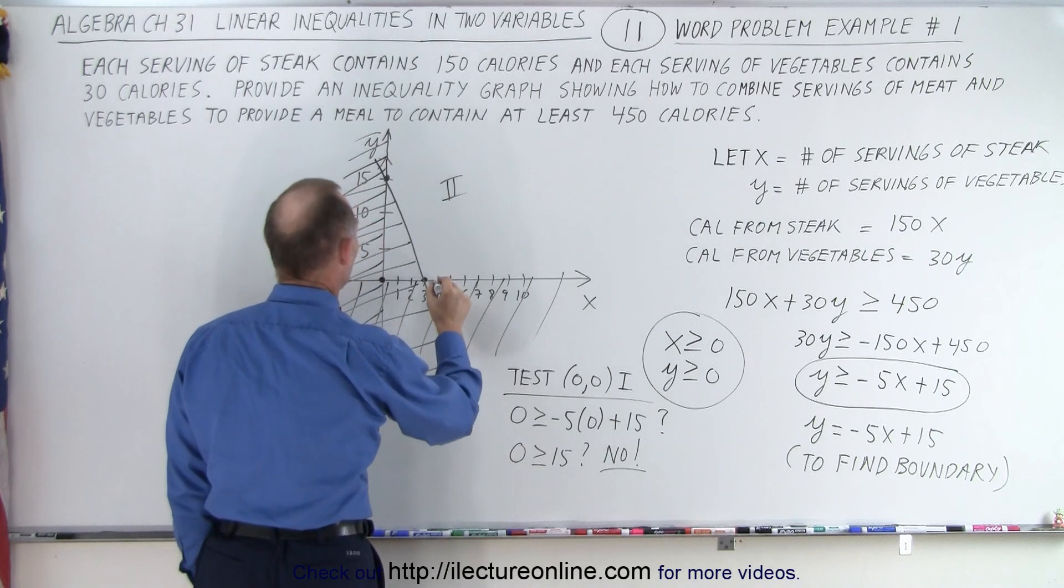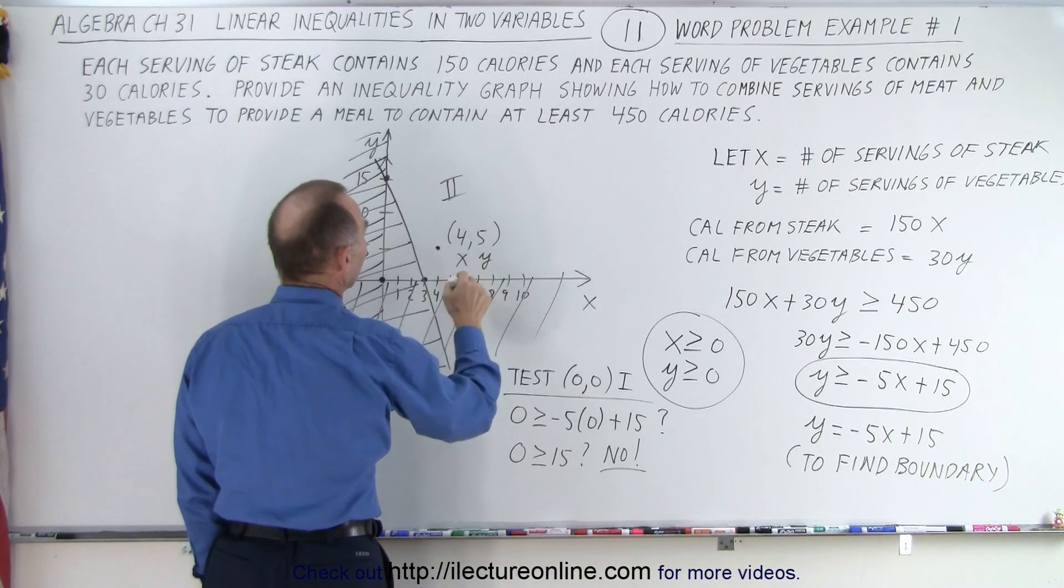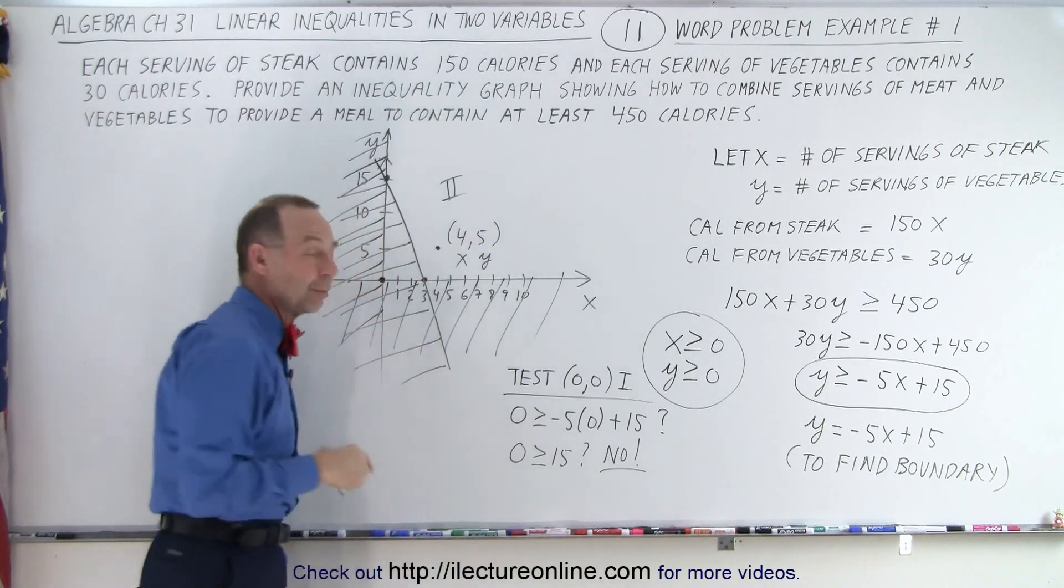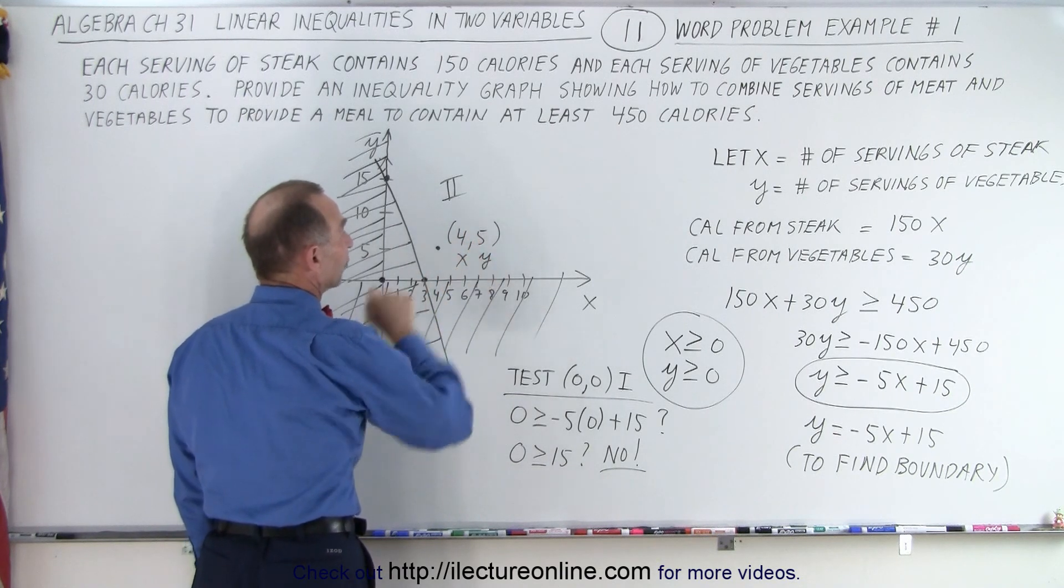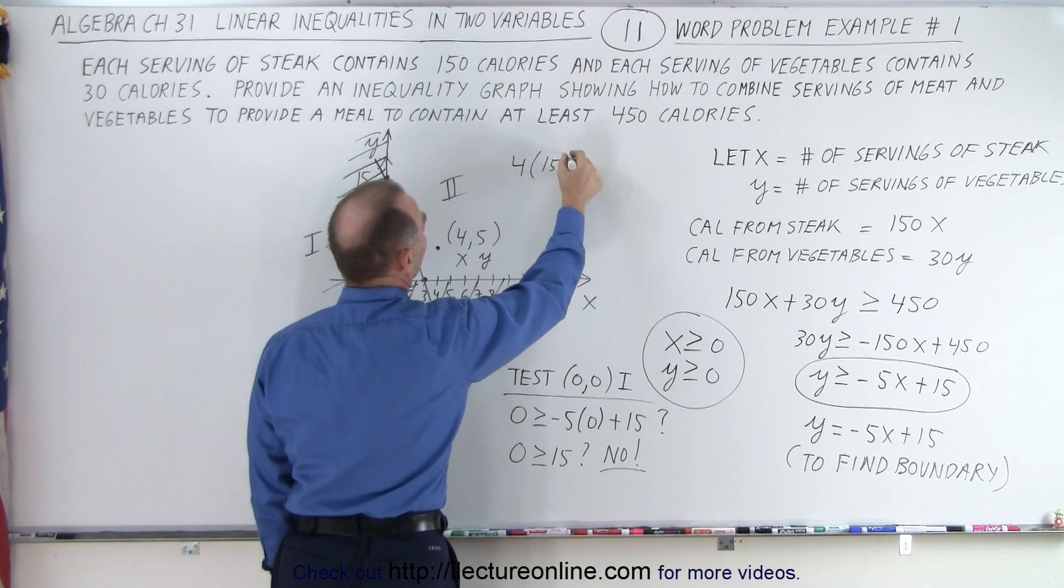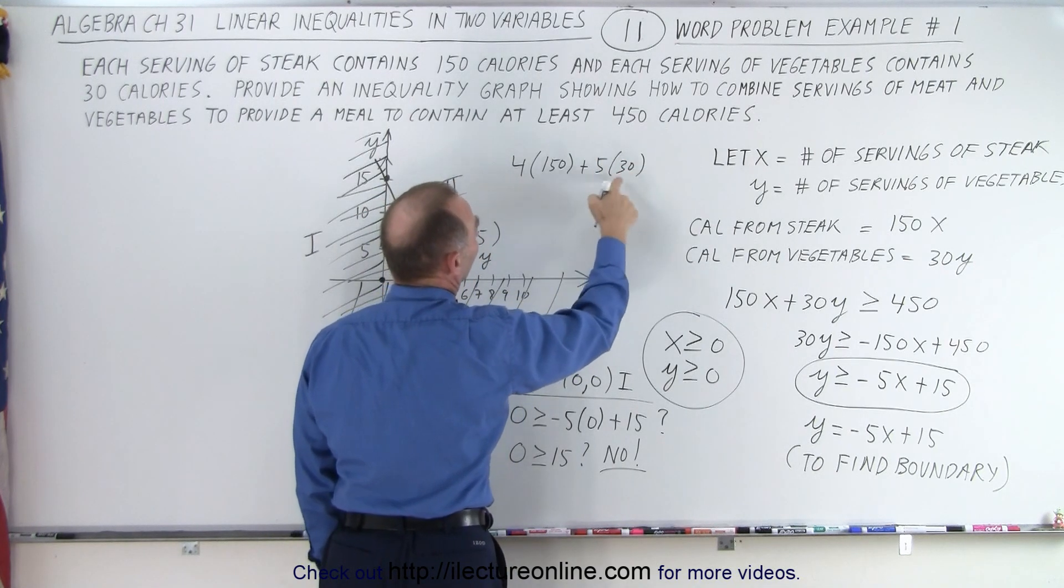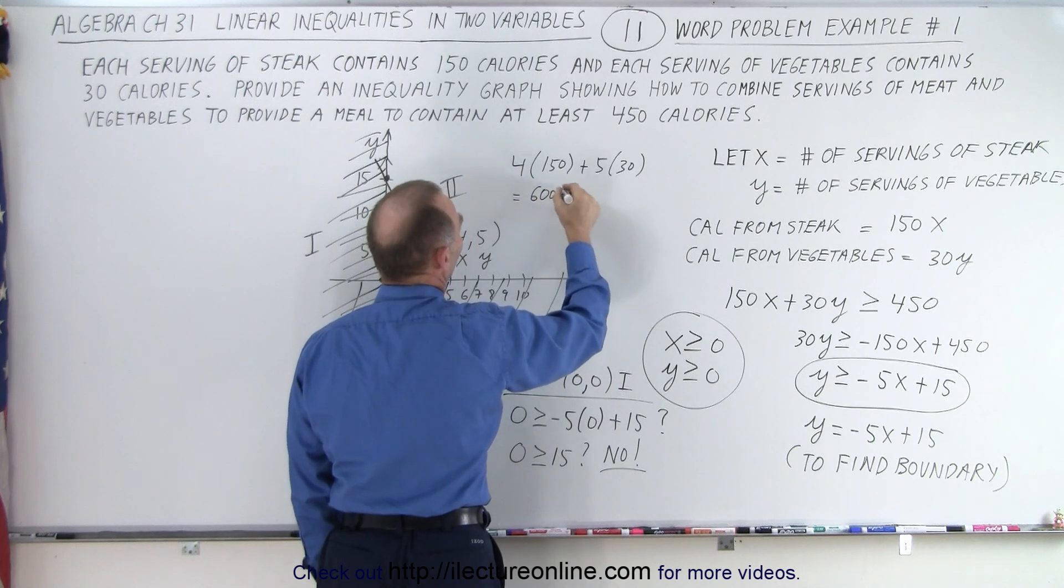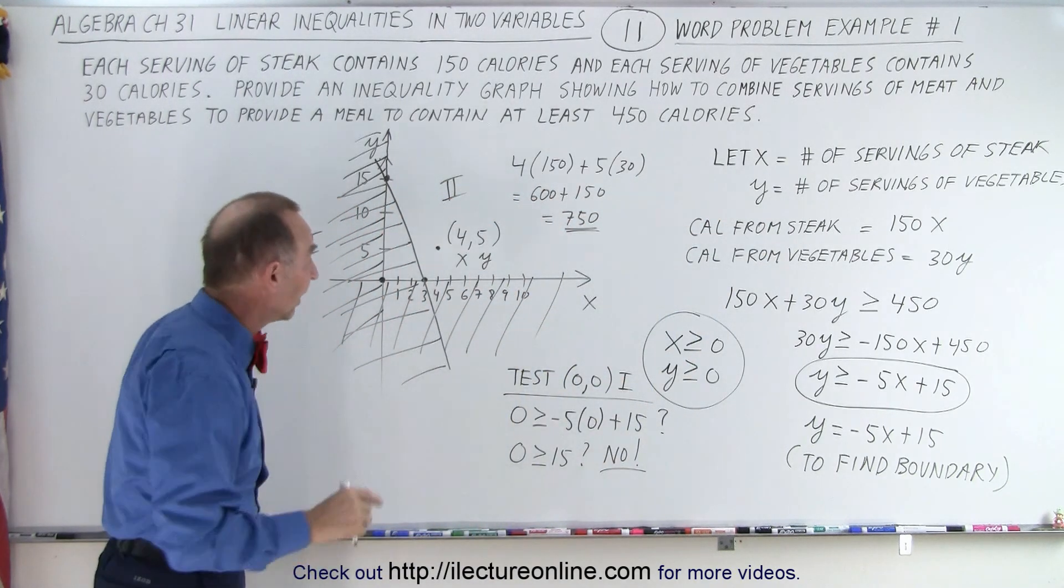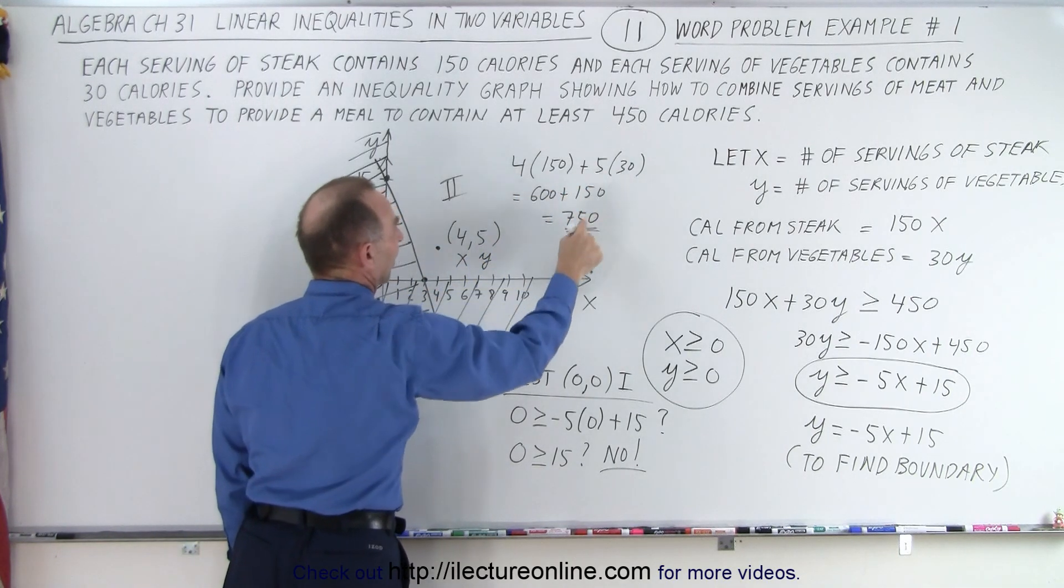For example, let's go 4 and 5. This is 4 and 5, for x and y. So x is the number of servings of steak, and y is the number of servings of vegetables. Let's say I want to put a meal together with 4 servings of steak and 5 servings of vegetables. For that meal, I get 4 times 150 calories, plus 5 times 30 calories, that would be 600 plus 150, which is 750 calories. Notice that's at least 450, which I wanted, and therefore that's a valid meal. A meal with 4 servings of steak, 5 servings of vegetables, will give me 750 calories.